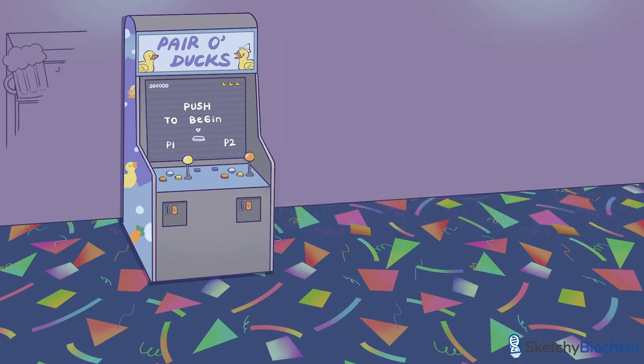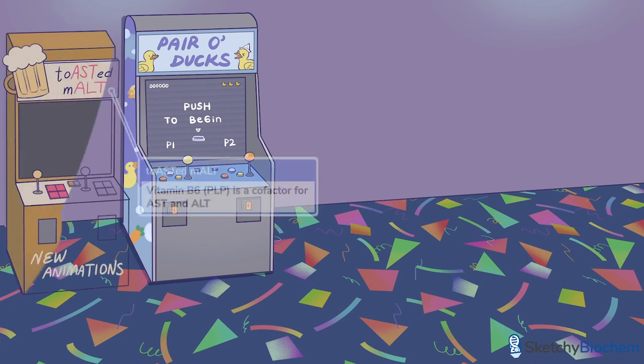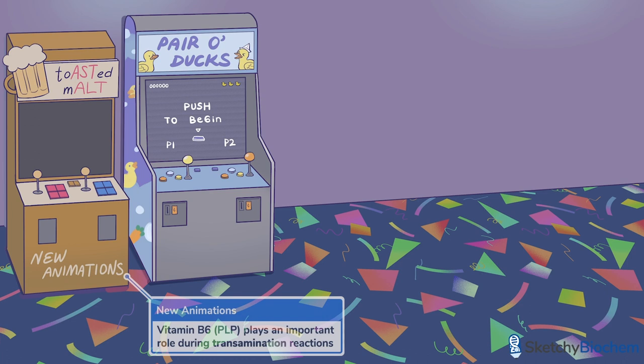Anyone up for toasted malts? This frosty beverage will remind you of AST and ALT, two major enzymes involved in transamination. To remind you of the more general case, we've added a whole bunch of new animations to this classic game.